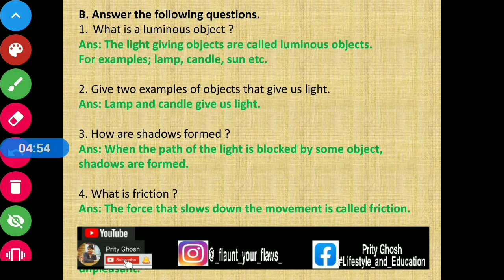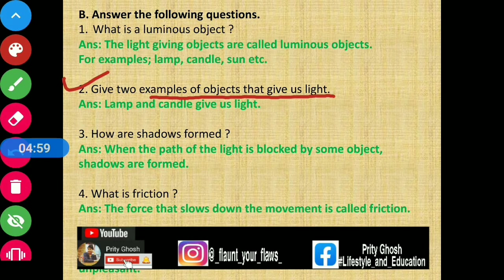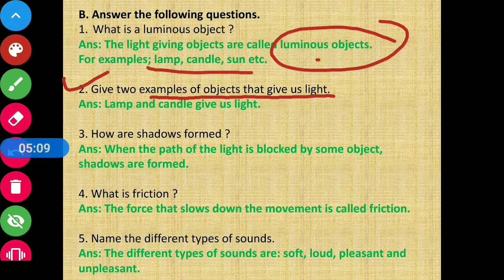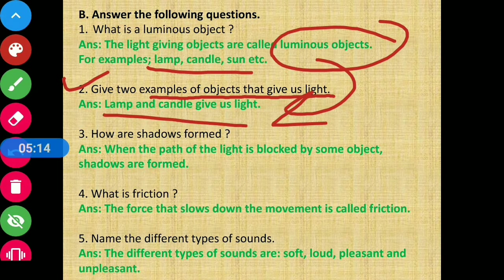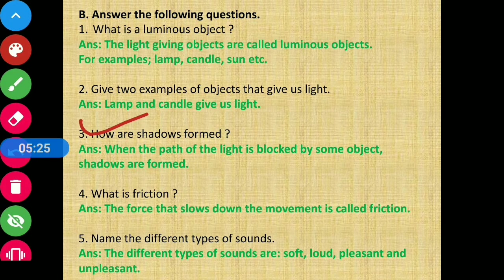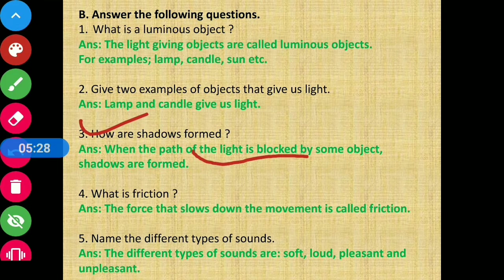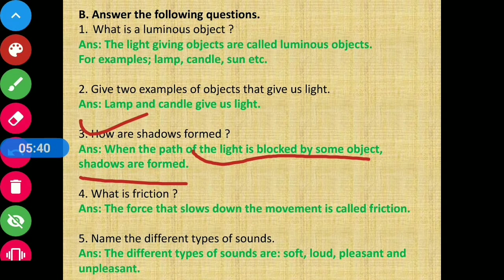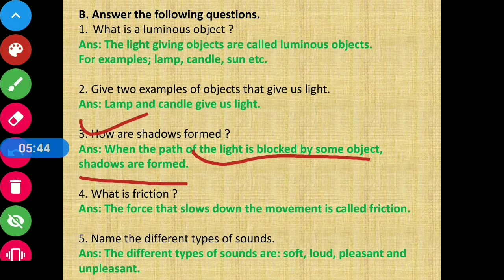Question number two: Give two examples of objects that give us light. This is the same question - we need to name two things that give us light, means luminous objects. I have written lamp and candle give us light. Next, question number three: How are shadows formed? Answer is: When the path of light is blocked by some object, shadows are formed. Jab bhi light ka path block ho jata hai kisi object ki wajah se, to shadow ban jati hai.